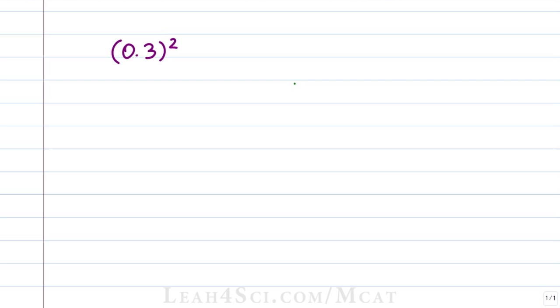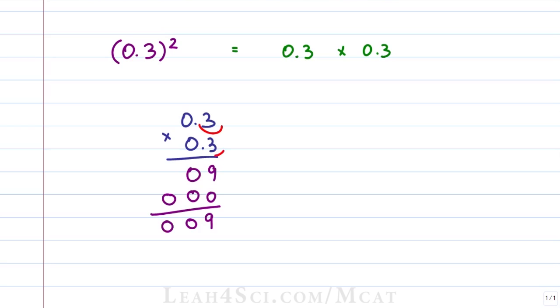How do you solve this without a calculator, and quickly so that it doesn't waste time on your exam? If you think about what we're looking at, 0.3 squared means that we have 0.3 times 0.3. This is how you're not going to do it on the MCAT — this method wastes too much time. The other way to look at it is to say: let's multiply 3 times 3, that will give me 9, and then use the decimal trick.